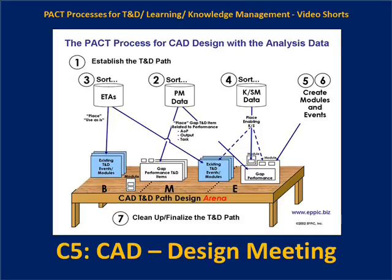The first step is to establish the training and development path. You can see on the diagram that the table has been divided into B, M, and E — that stands for Beginning, Middle, and End. Even though the training and development path might end up with four, five, or ten phases later on, it always starts off with a beginning, a middle, and an end.